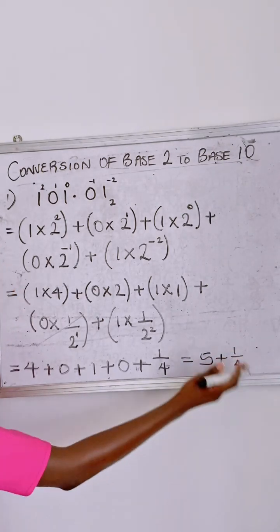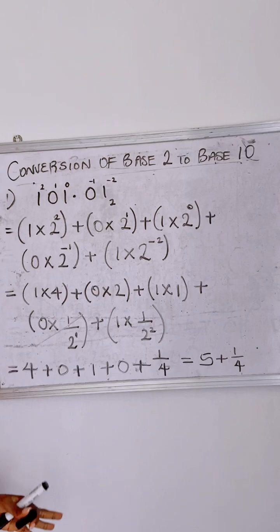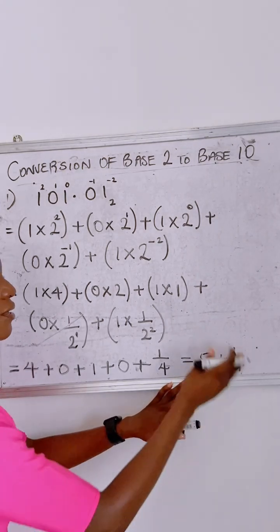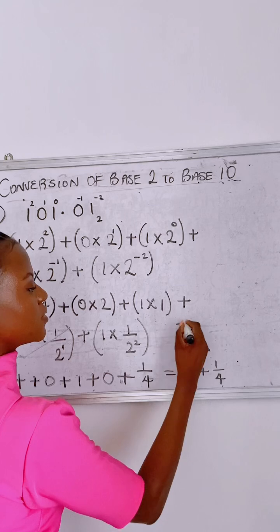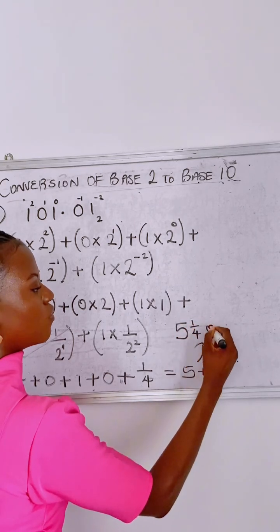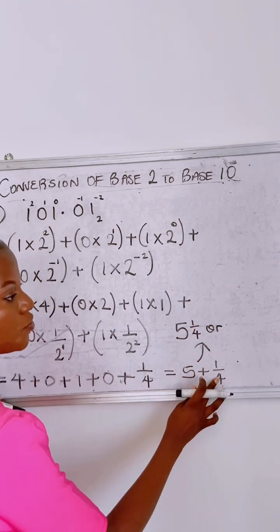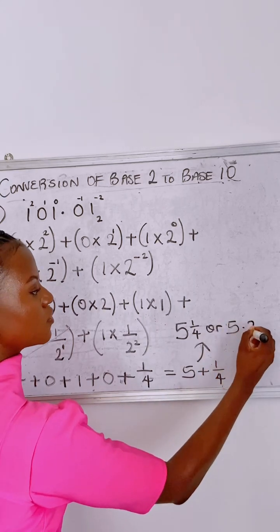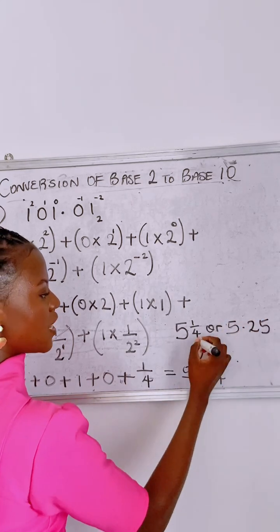Now you could have this in two ways, either in decimal form or in fraction. Five plus one over four is the same thing as 5¼, or one over four divided by four is 0.25. So five plus 0.25 will give us 5.25. So you could have your base ten written like that.